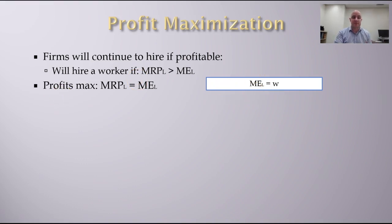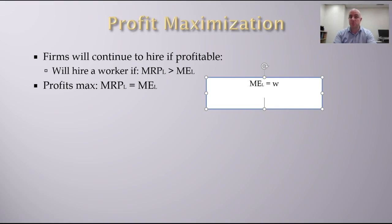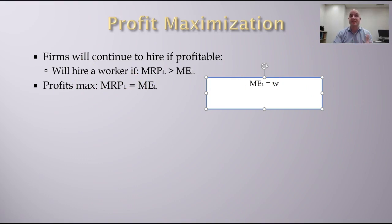Let's assume that markets are competitive. If the labor market is competitive, the marginal expense of labor equals the wage, determined by the market where supply equals demand. So for the firm deciding how much to employ: the marginal expense equals the wage, and the profit maximization point is where the marginal revenue product of labor equals the marginal expense of labor.